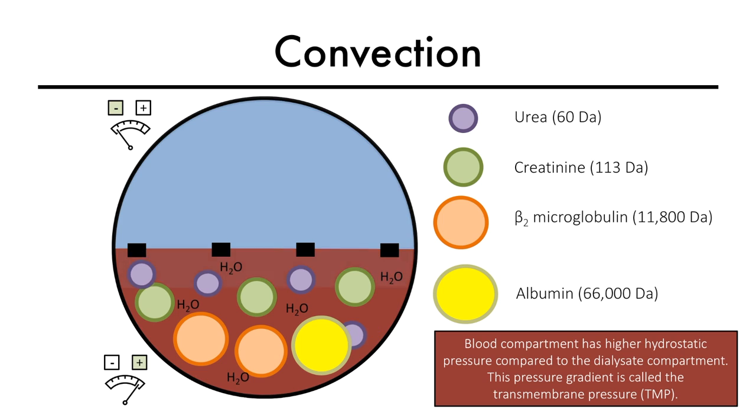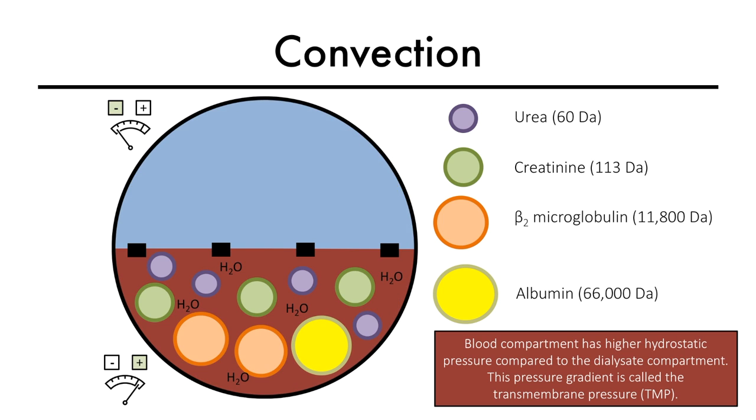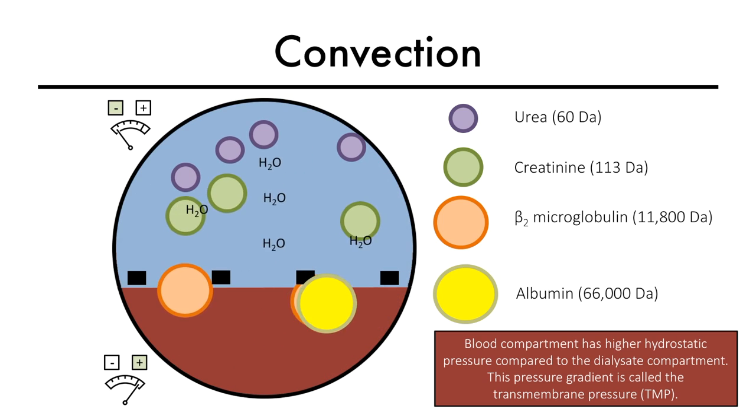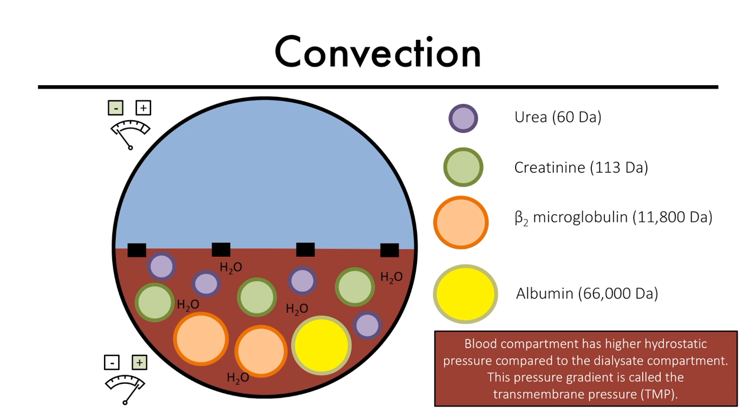As water moves across the semi-permeable membrane, it drags with it, at the same rate, both small solutes such as urea and creatinine, as well as middle molecules such as beta-2 microglobulin.